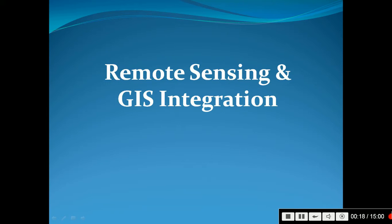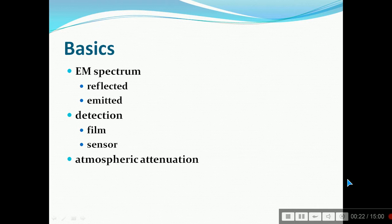Let's talk about remote sensing and GIS integration, the basics of remote sensing and integration to GIS. When we talk about remote sensing, the first thing that comes is electromagnetic spectrum, which may be reflected or emitted.